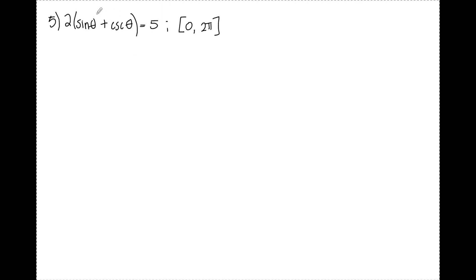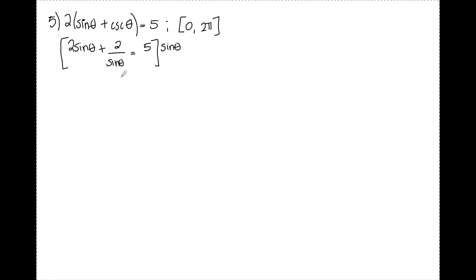For number 5, I see two different trig functions right away, so I want to rewrite in terms of sine, distributing the 2 as I go. 2 times sine theta gives 2 sine theta. Since cosecant theta equals 1 over sine theta, I get 2 over sine theta, making the full equation 2 sine theta plus 2 over sine theta equals 5. To clear the denominator, I multiply the entire equation by sine theta: 2 sine theta times sine theta gives 2 sine squared theta, and the sine thetas cancel to leave plus 2, with the right side becoming 5 sine theta.